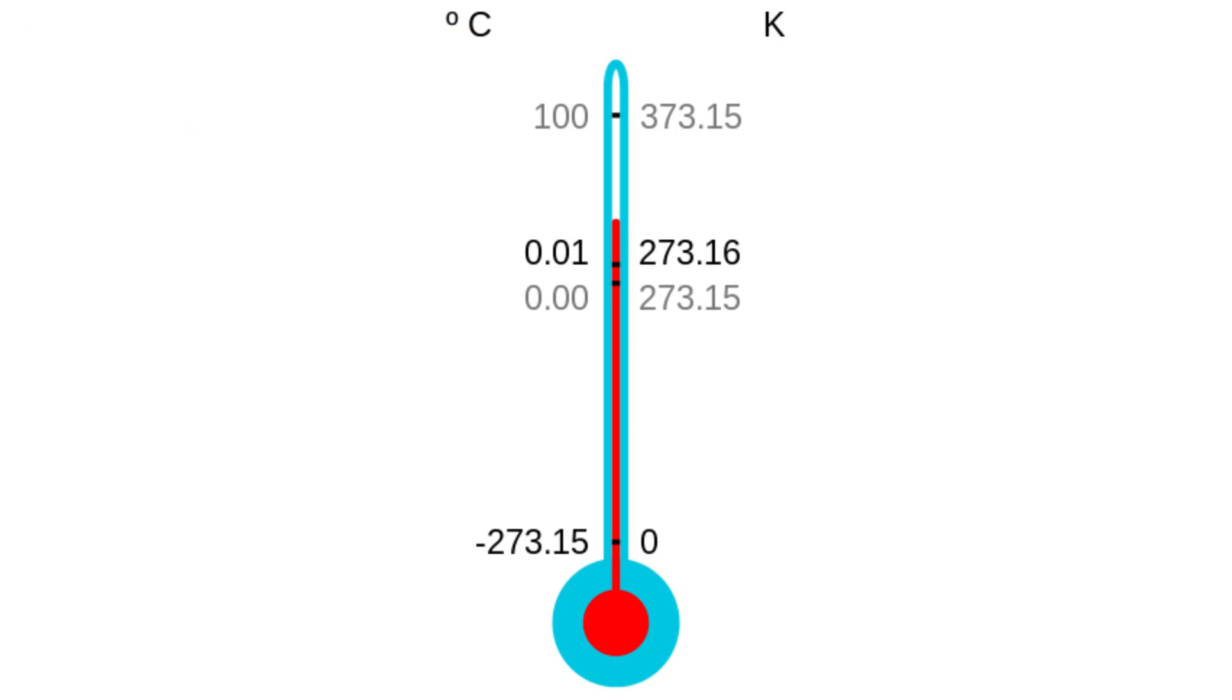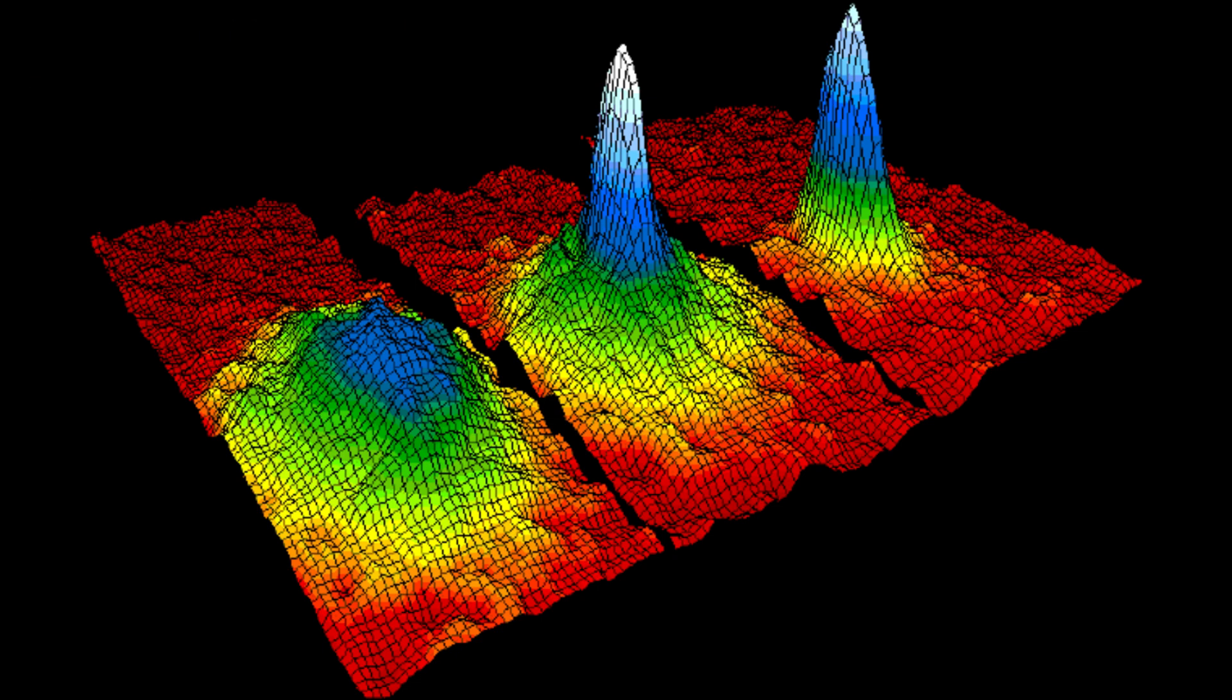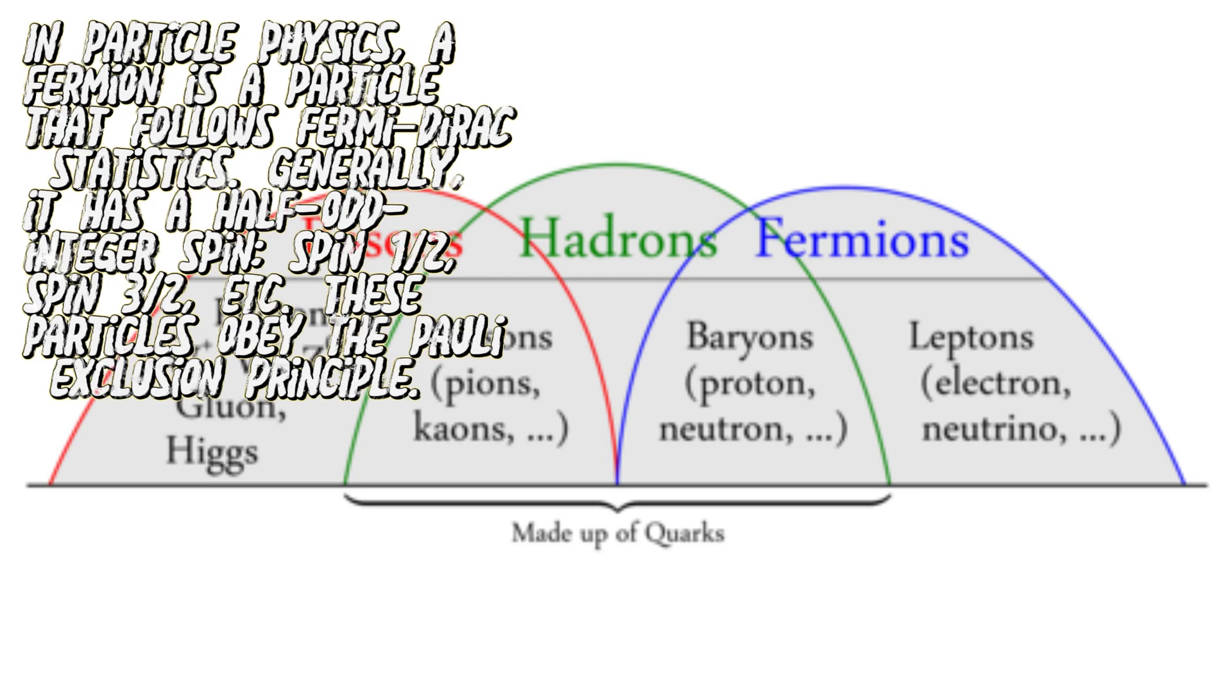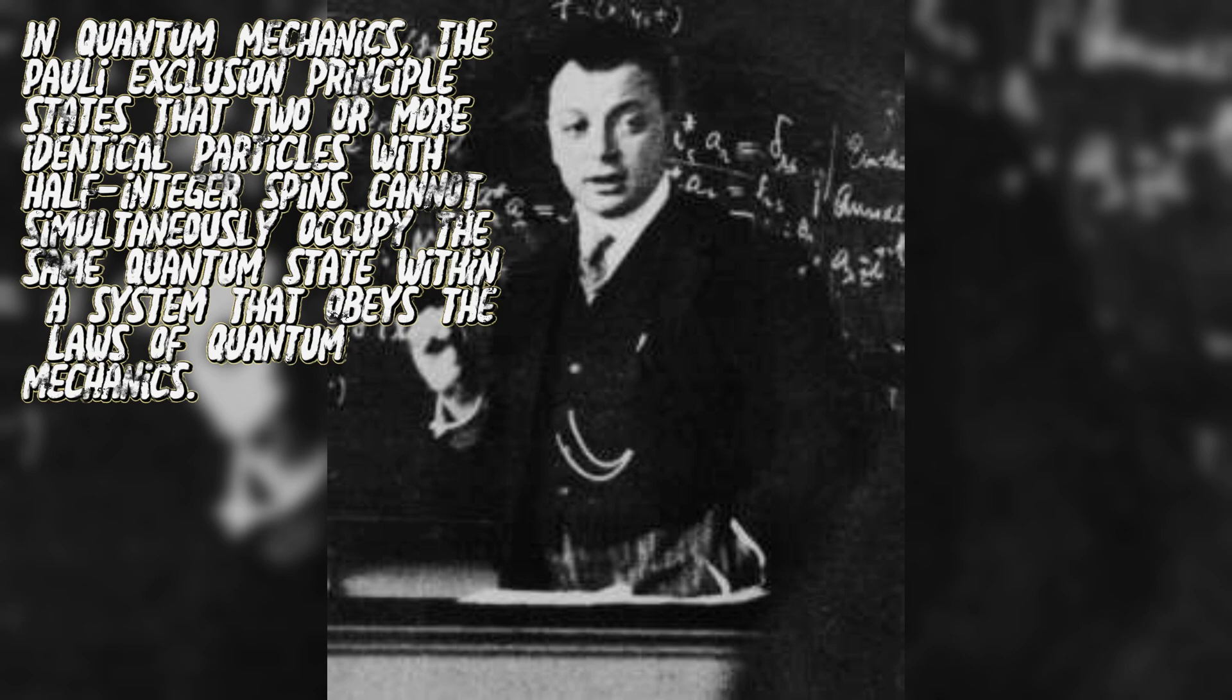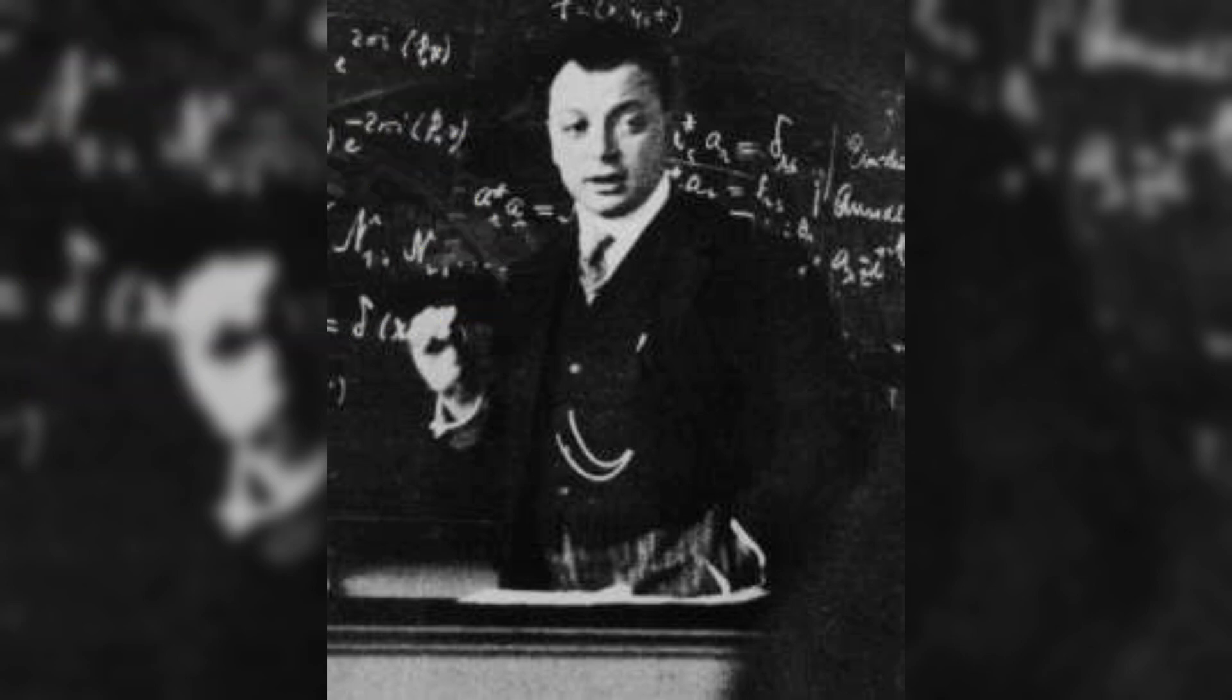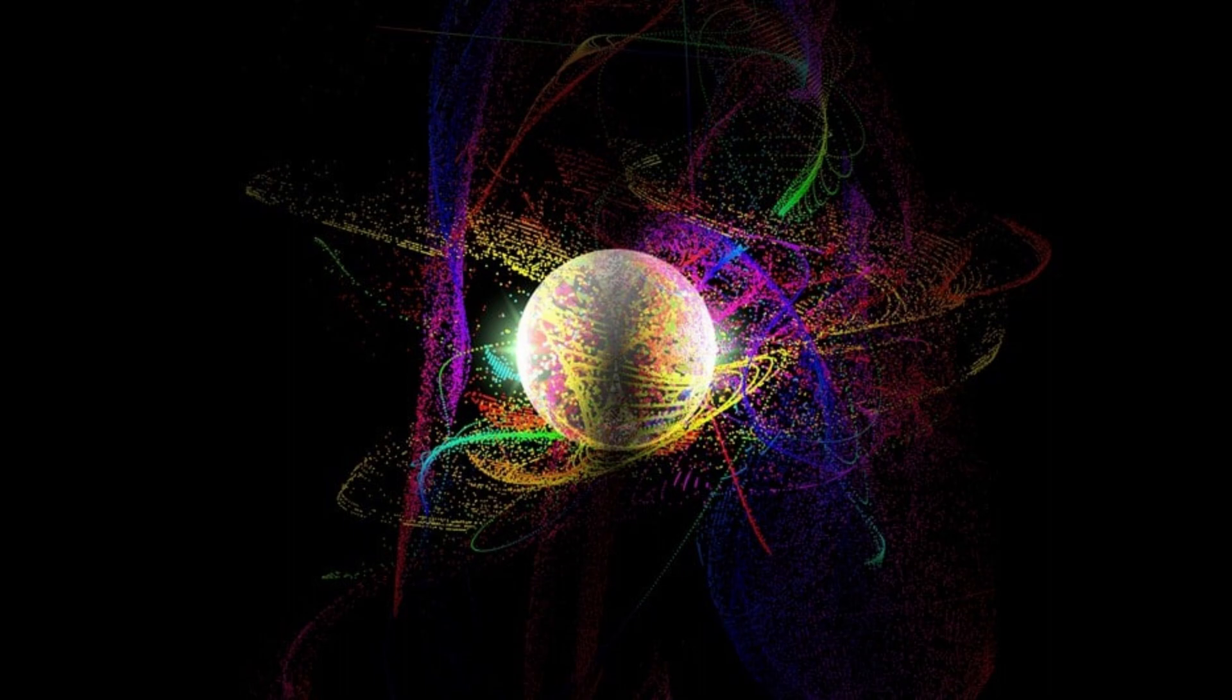Four is fermionic condensate. A fermionic condensate is similar to the Bose-Einstein condensate but composed of fermions. The Pauli exclusion principle prevents fermions from entering the same quantum state, but a pair of fermions can behave as bosons, and multiple such pairs can then enter the same quantum state without restriction.